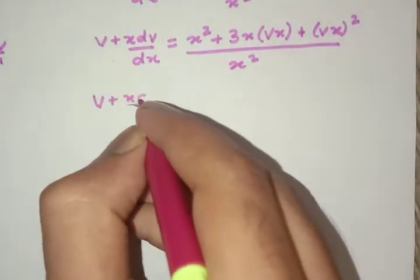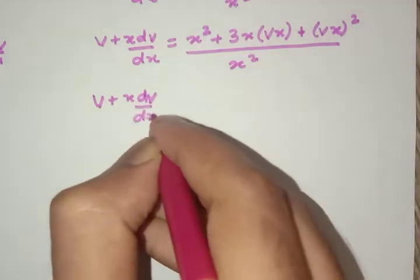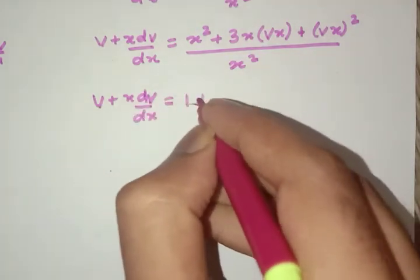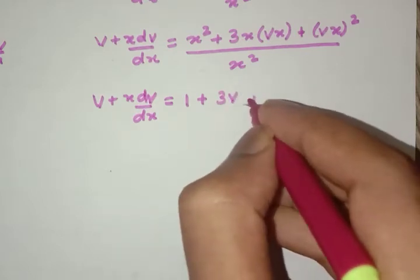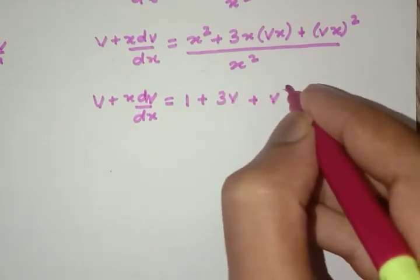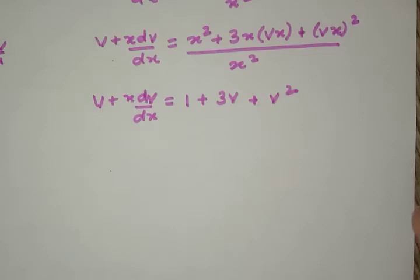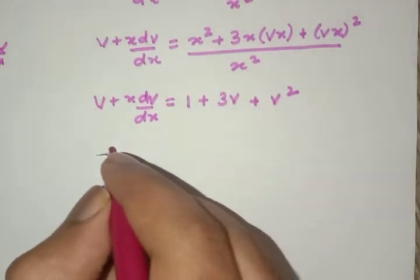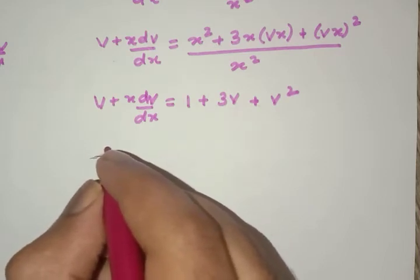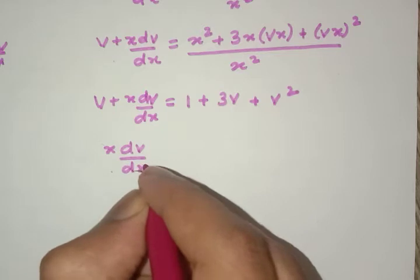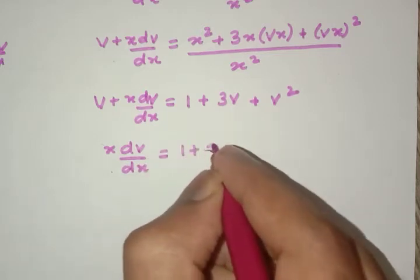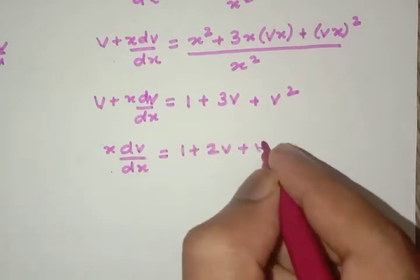Now v + x(dv/dx) = 1 + 3v + v². This gives us x(dv/dx) = 1 + 2v + v².